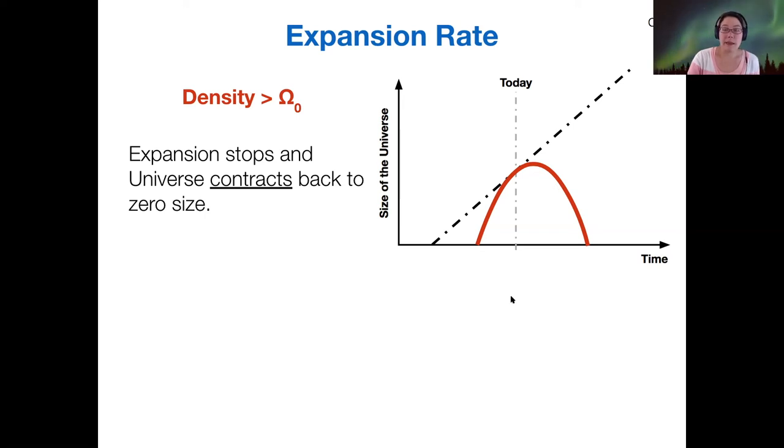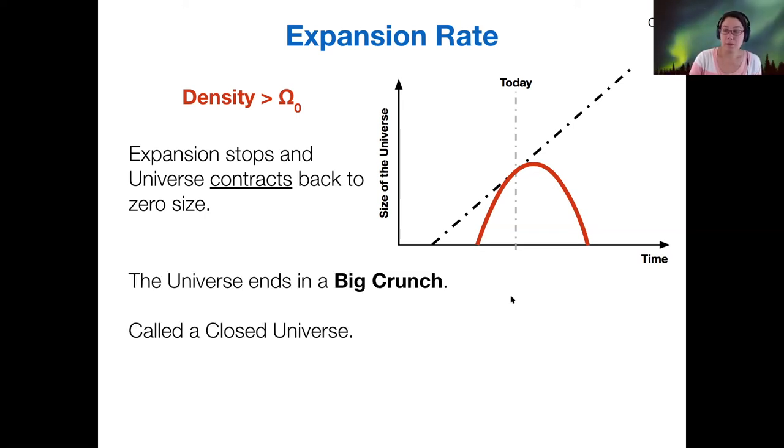So in that scenario, the universe ends in what we call a Big Crunch. And this particular type of universe is called closed because it comes back in on itself. This also relates to the geometry of space time. I'll tell you about that in a second.